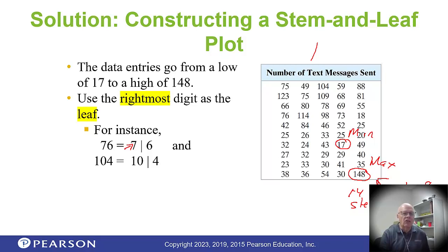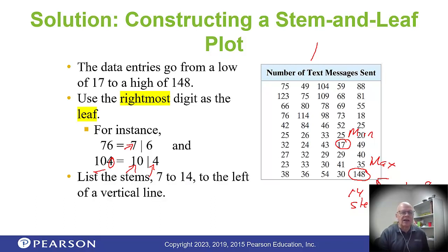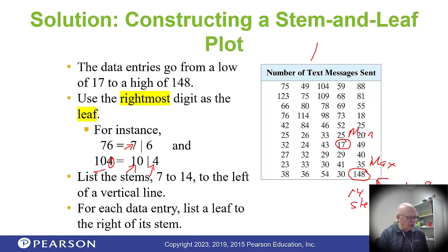For 104, the 4 becomes the leaf and the rest becomes the stem. You usually only have one stem for each set of 10 or 20. List the stems all the way from 1 to 14 on the left, put a vertical line after them, then for each data value put the leaf to the right of the corresponding stem.